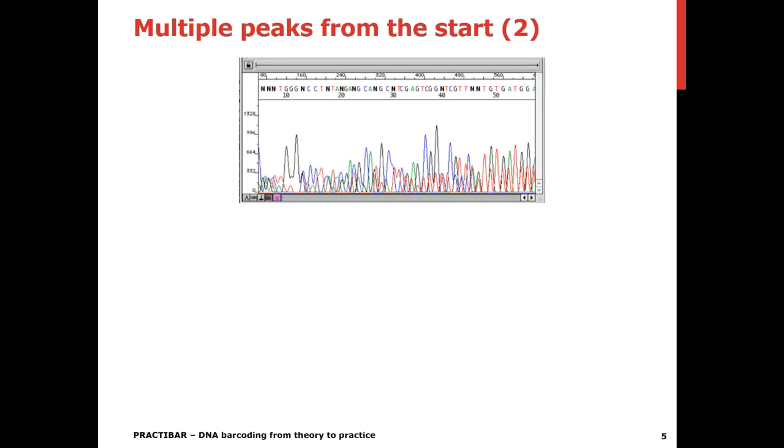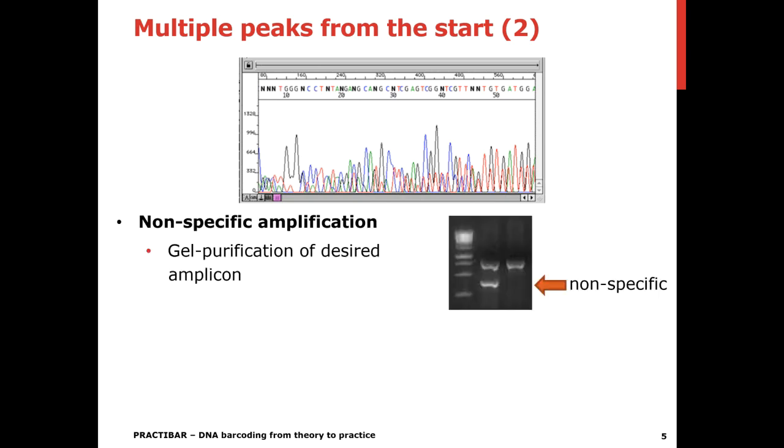So another possibility of multiple peaks from the start can be that you have non-specific amplification. And so you got, for instance, instead of one product, you get also another non-specific product. And if you sequence this, you get two trace files basically together in one trace file, two different products. So you get very messy trace files.